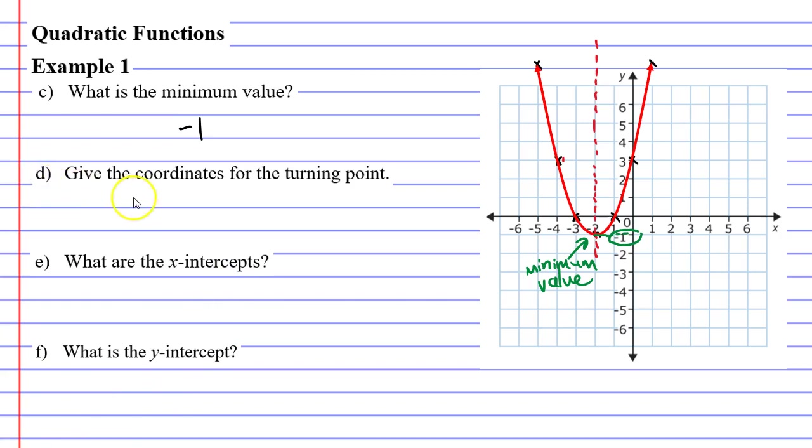For question D, we need to give the coordinates for the turning point. We have already stated that this turning point or minimum value lines up with a y value of negative 1. And we've also mentioned that it lines up with an x value of negative 2. So we'll write that down as well.